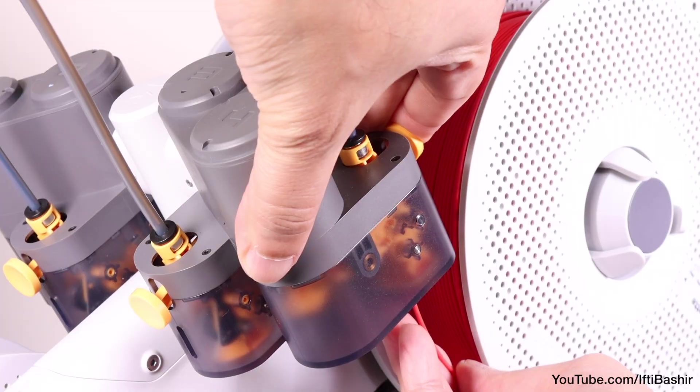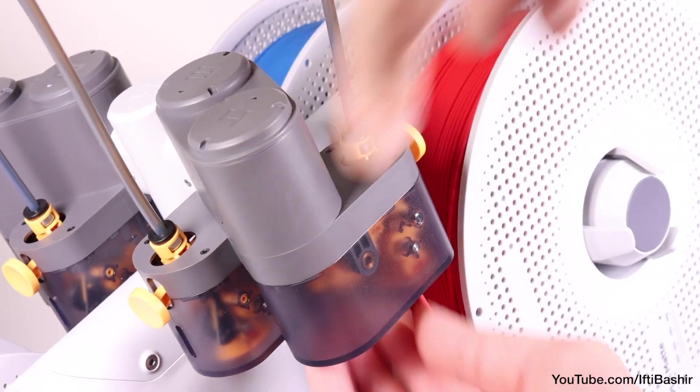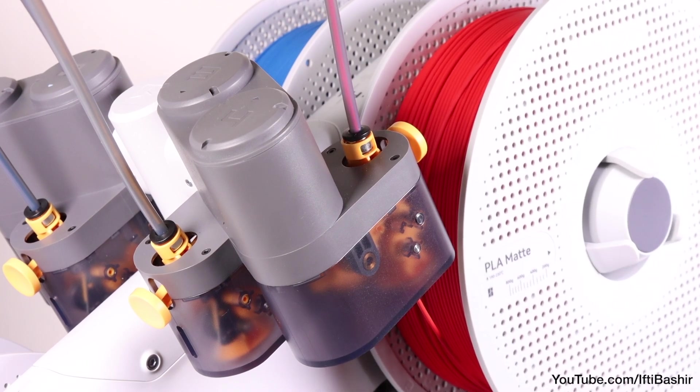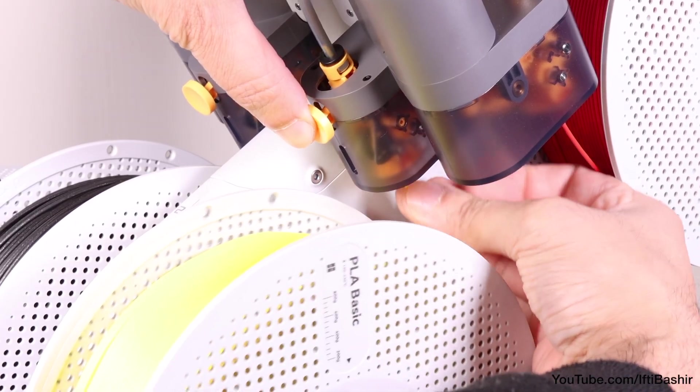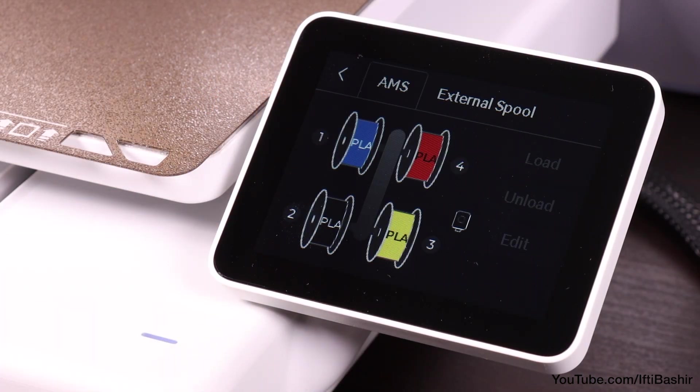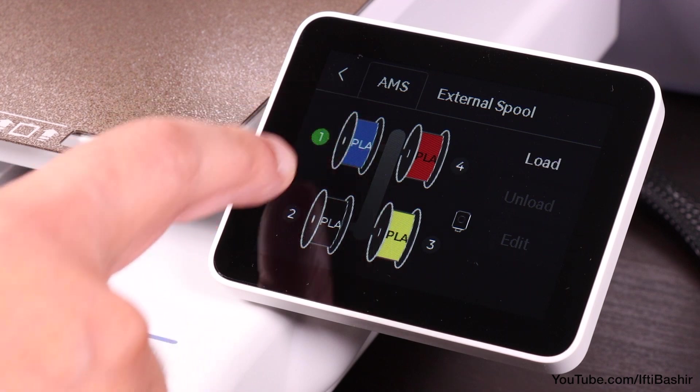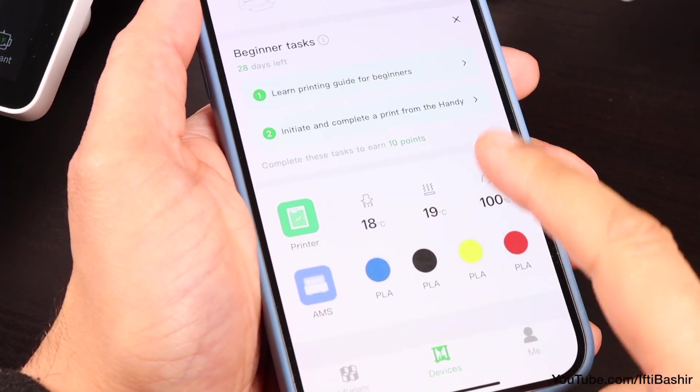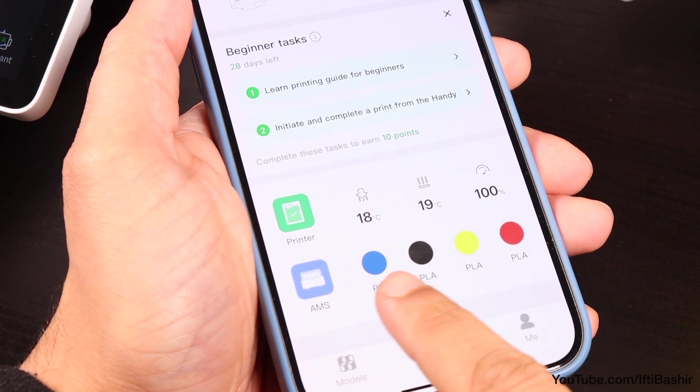The beauty of this filament is with the spool which comes complete with a pre-installed RFID tag. The AMS system reads not only the type of plastic but also the colour from that tag after which it automatically updates the printer. No further action necessary. It's small details like this that make the A1 such an easy to use beginner friendly machine. A great feature that works wonderfully well.